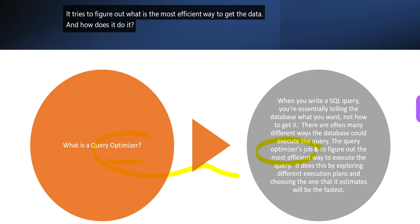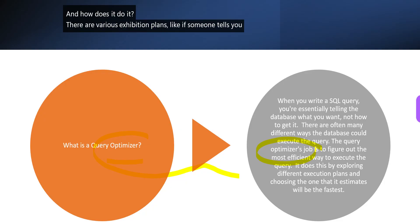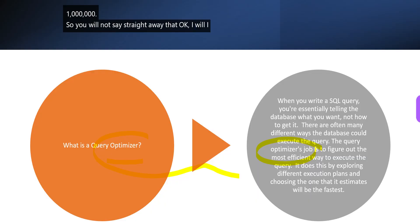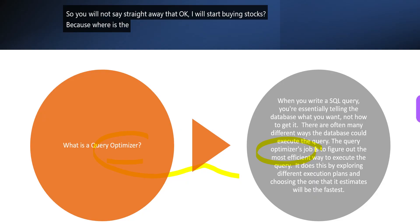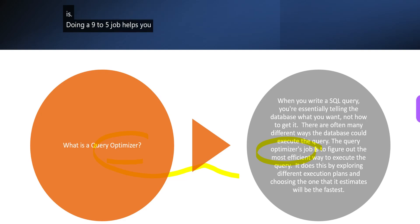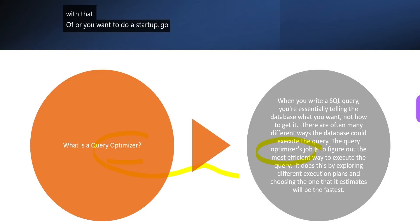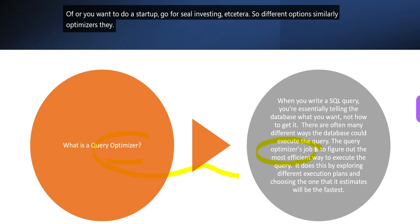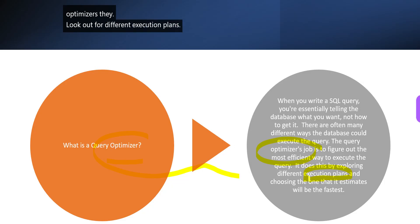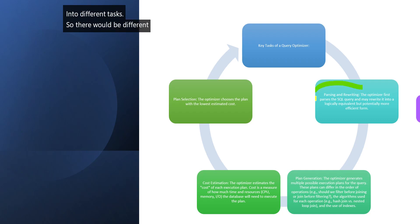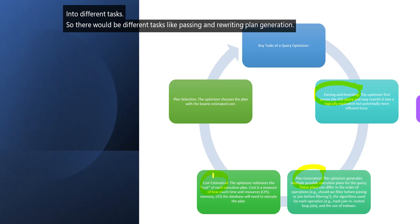So how to get that data — this is the job of the query optimizer. It tries to figure out what is the most efficient way to get the data. There are various execution plans — like if someone tells you you have to earn 1 million, your first 1 million, you will try to explore different options: doing a 9 to 5 job, acquiring trading skills, doing a startup, going for seed investments, etc. Similarly, optimizers look out for different execution plans and choose the one which is the fastest.